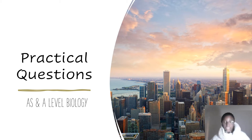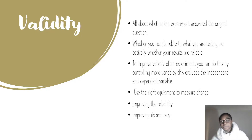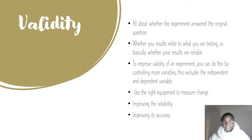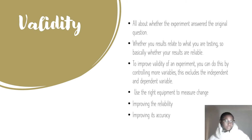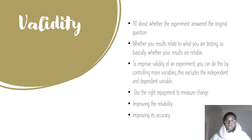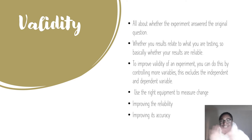The first thing we're going to look at is validity. In terms of whether an experiment is valid, it's basically whether the experiment answers your original question — the thing you are actually investigating — and whether your results relate to what you are testing. Think of validity as whether your experiment is actually true and answers your original question. To improve validity, you can control more variables, excluding the independent and dependent variable.